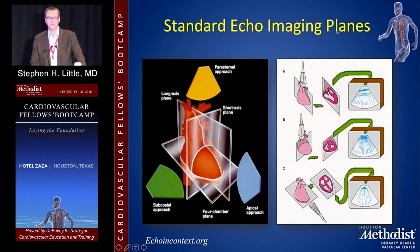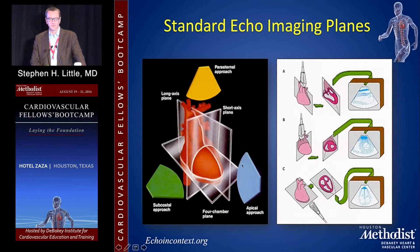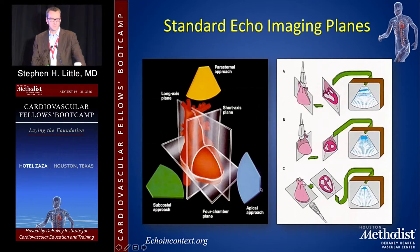The absolute basics on echo — this is a transthoracic echo. You acquire these images from multiple different imaging angles, which is super important. The workhorse angles are from the apex — you think of the probe as like a 2D knife, we just see a 2D plane angled from that image. One from the apex, one from the subcostal — our go-to view for post-op effusions and that sort of concern — and then parasternal. These are the big three imaging angles.